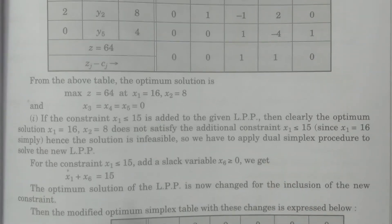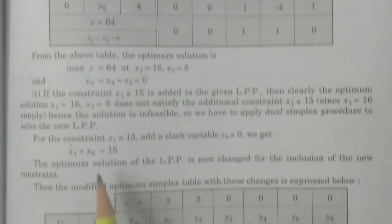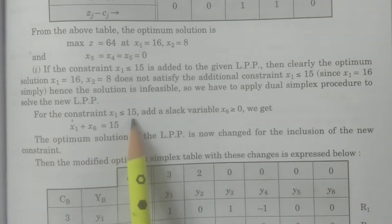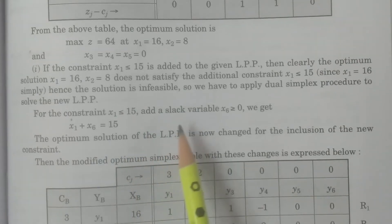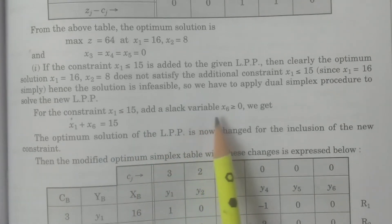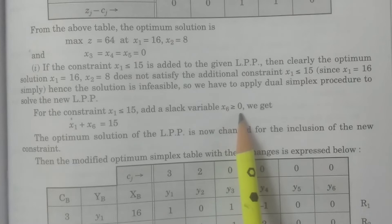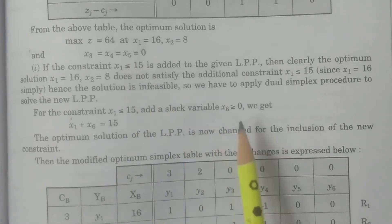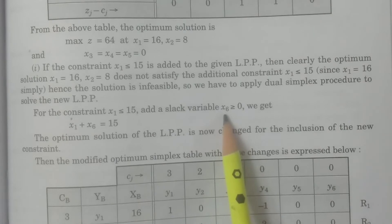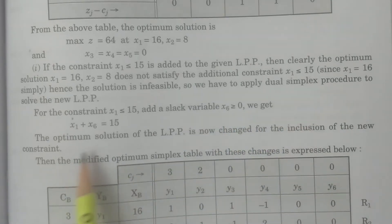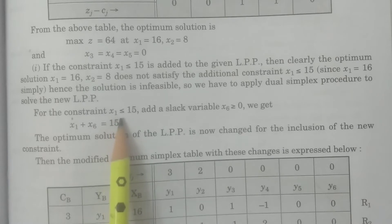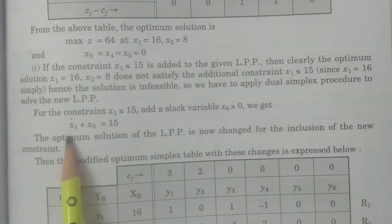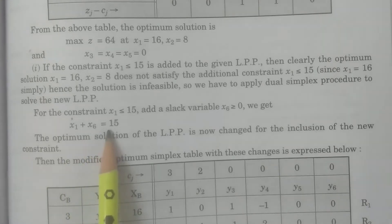Now for this constraint x1 ≤ 15, you have to add a slack variable x6 ≥ 0. Since we already have variables up to x5, I am considering x6. By adding the slack variable and converting the inequality into an equation, you get x1 + x6 = 15.